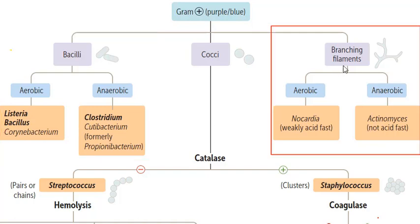Branching filaments look like trees or stems. They are of aerobic type and anaerobic type. In aerobic, we have Nocardia, which is weakly acid-fast, while in anaerobic, we have Actinomyces, which is not acid-fast.